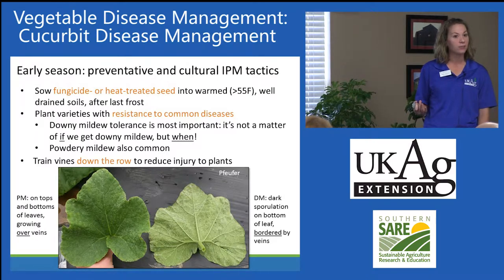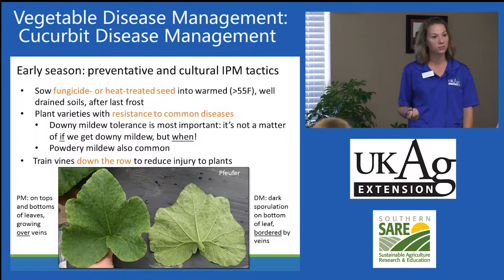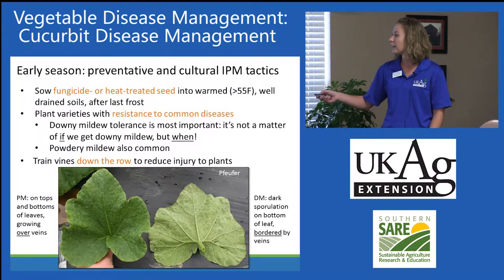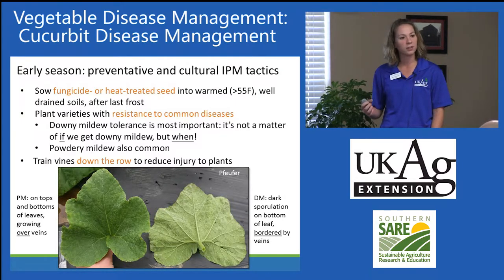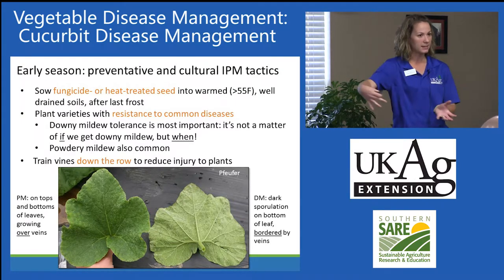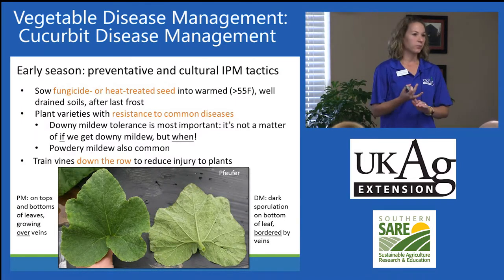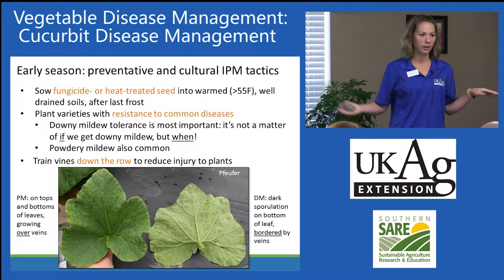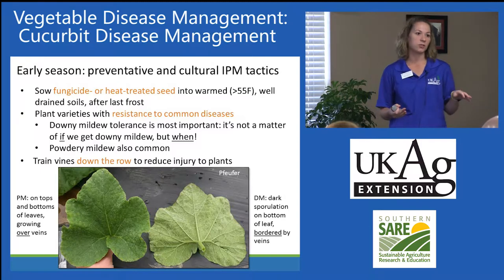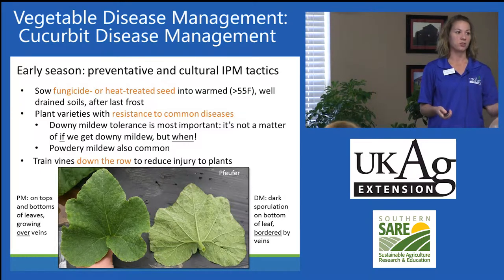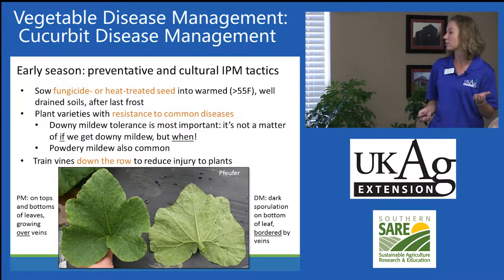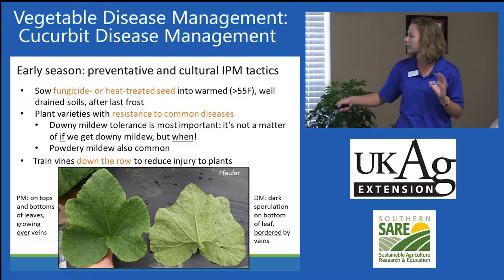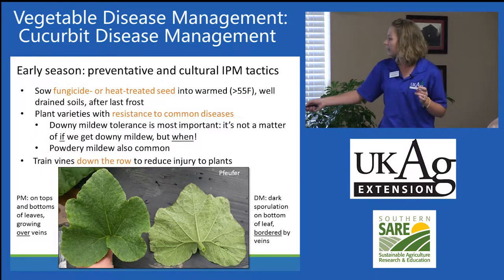Powdery mildew is also common, but luckily we have more selections of resistant varieties to powdery mildew in cucurbits. When vines begin to run early in the season, they should be trained down the row. This prevents you from stepping on them and prevents them from jumping into the lawn and being mowed, because any plant injury is a potential mode of ingress for pathogens.